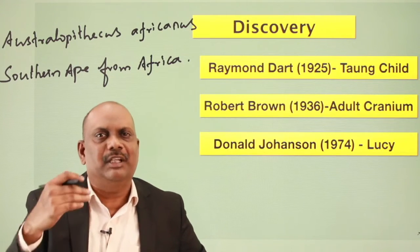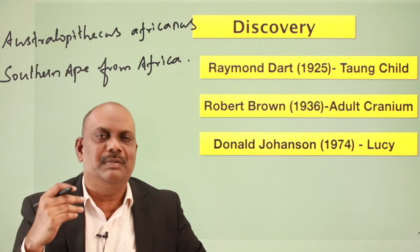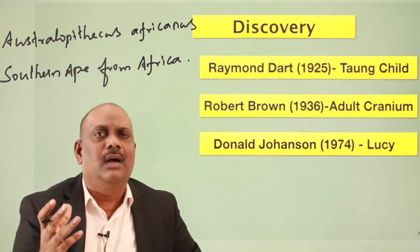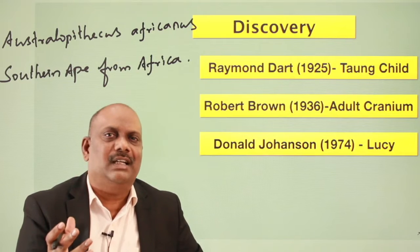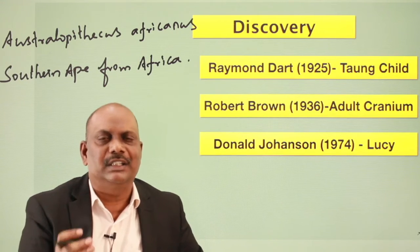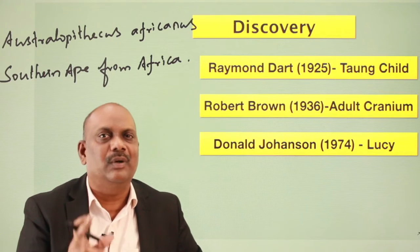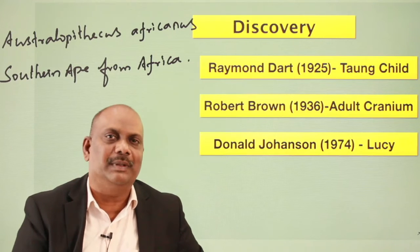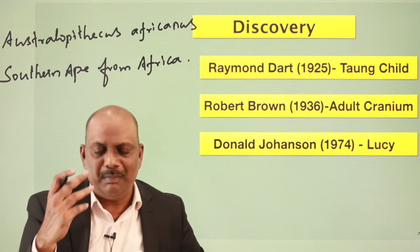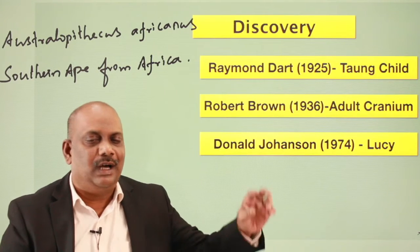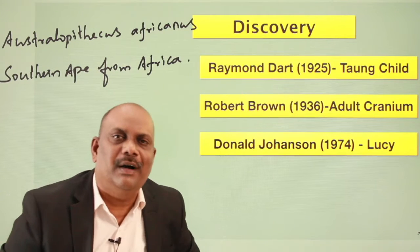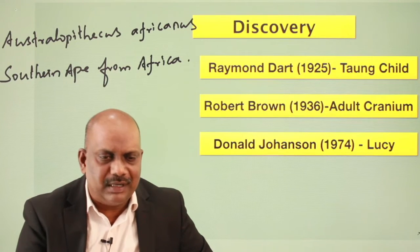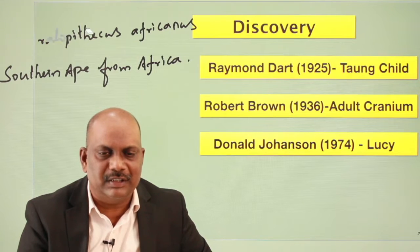Later, with a number of subsequent discoveries, several other species of Australopithecus were found from Africa. Based on those fossils, there was ample evidence to show that Australopithecus were in the line of human evolution and that we human beings descended from them. This fossil baby was famously named the Taung Baby or Taung Child by Raymond Dart.